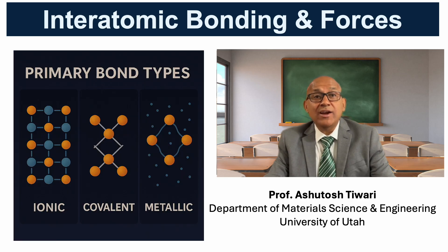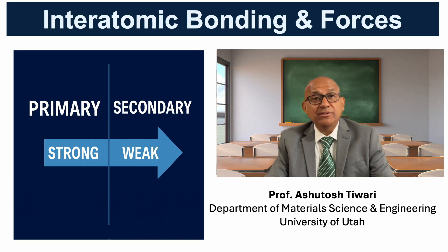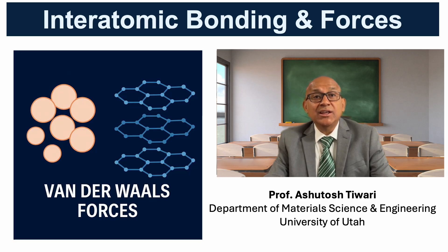So ionic, covalent and metallic bonding together account for the primary forces that give solids their strength and stability. Now, let us move to the secondary bonds, which are much weaker than primary bonds but are still extremely important in determining material behavior. These bonds usually have energies of just a few kilojoules per mole. The first type is Van der Waals forces.